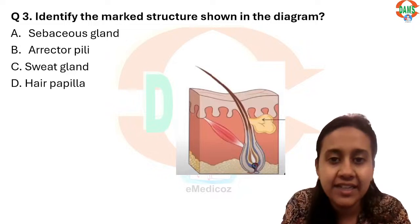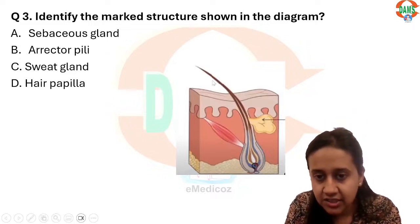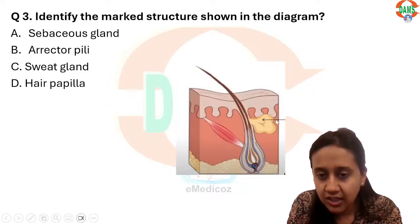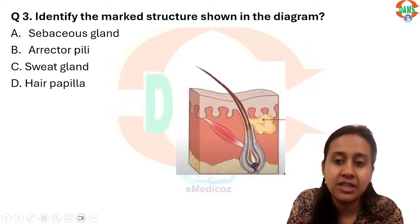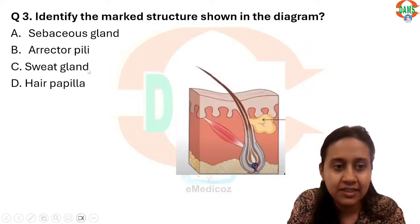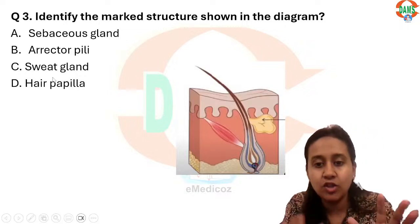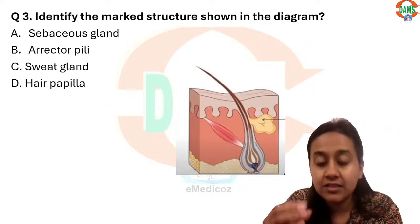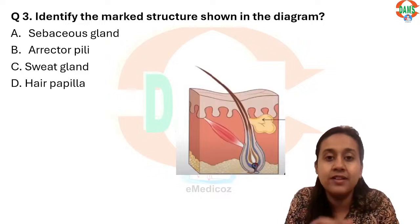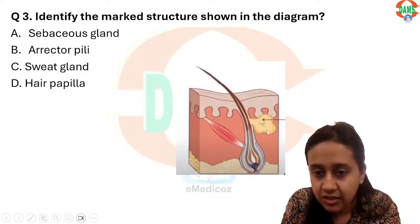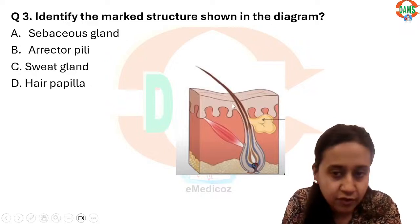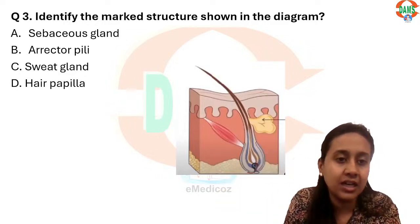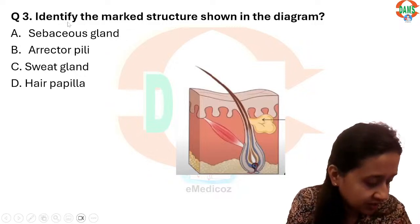Next question: identify the marked structure. Here an image is given — you can see a hair. The structure marked is the sebaceous gland. In your hair there is a sebaceous gland which drains into the hair follicle. Sebaceous gland, arrector pili muscle, sweat gland, and hair papilla were the options given. The best answer is the sebaceous gland — it is a holocrine gland that always opens into the hair follicle. Sebum is released into the hair follicle and comes out on the skin surface.